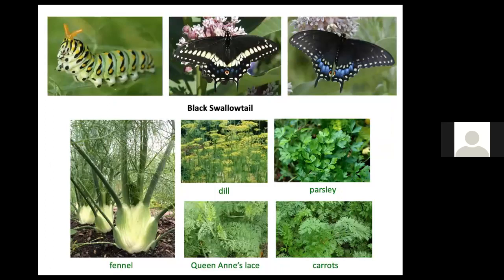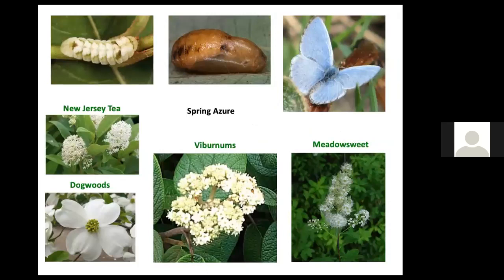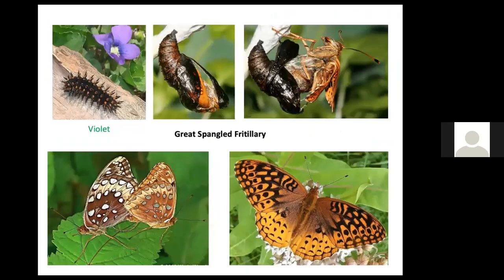Black swallowtail caterpillars must eat leaves of the Apiaceae family — dill, parsley, carrots, fennel, and related plants. Host plants for the Baltimore checkerspot are either the beautiful wildflower turtlehead, which grows in moist places, or different species of plantain — common weeds in lawns — broadleaf or narrowleaf. Spring azure butterfly larvae can feed on New Jersey tea, viburnums, meadowsweet, and dogwood leaves, while violet is the host plant for the stunningly beautiful great spangled fritillary.